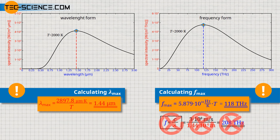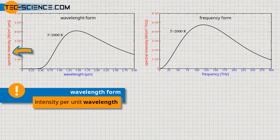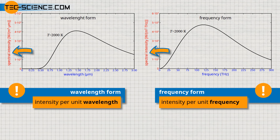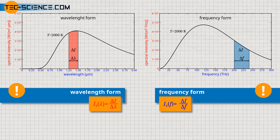It must be made clear that the spectral intensities plotted are different quantities in each case. In the wavelength form, the spectral intensity corresponds to the radiated intensity per unit wavelength, while in the frequency form it indicates the radiated intensity per unit frequency. Thus both spectral intensities must not be compared or equated without further consideration. Furthermore, the maximum of the spectral intensity must not be equated with the maximum of the absolute intensity or the maximum of the radiant power. The spectral intensity is a quantity related to the wavelength or frequency — one measures the radiant power in a certain wavelength or frequency interval and relates the radiant power to these intervals. A comparison is therefore only possible if the same wavelength intervals are considered. Since frequency is not proportional to wavelength but reciprocally proportional, equidistant wavelength intervals do not also mean equidistant frequency intervals.